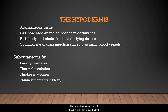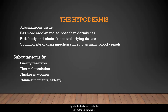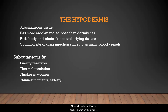The hypodermis, while often studied with the skin, is not actually part of it. It is a subcutaneous tissue with more areolar and adipose tissue than the dermis, it pads the body, and it binds skin to the underlying tissues. It's a common site of drug injection because of its many blood vessels. Subcutaneous fat is good for energy reservation and thermal insulation, is often thicker in women than men, and is thinner in infants and the elderly.